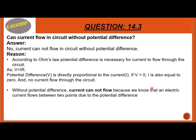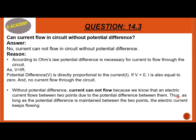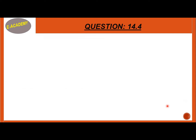Without potential difference, current cannot flow because we know that electric current flows between two points due to the potential difference between them. Thus, as long as potential difference is maintained between the two points, the electric current keeps flowing continuously.